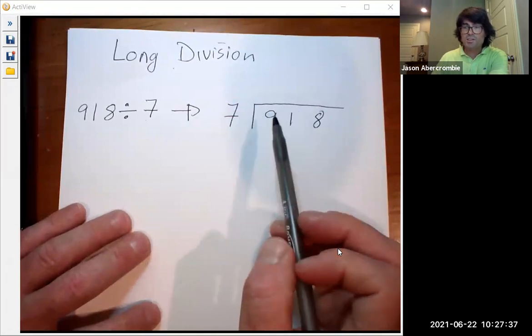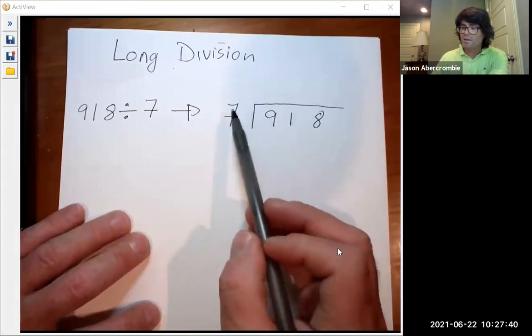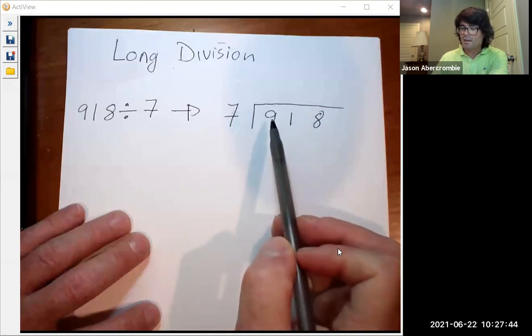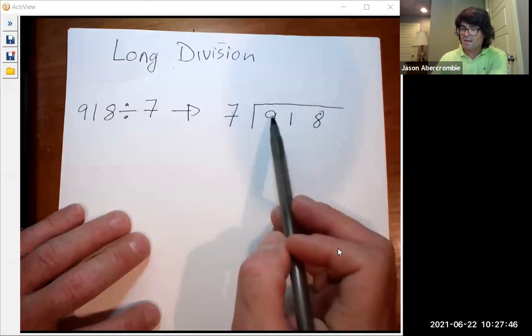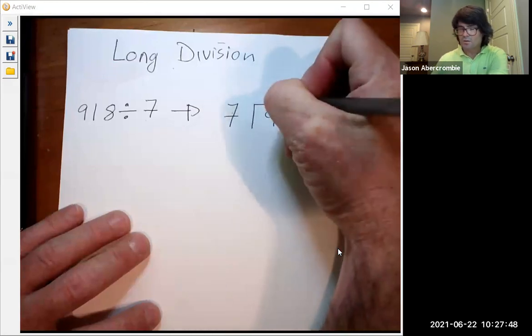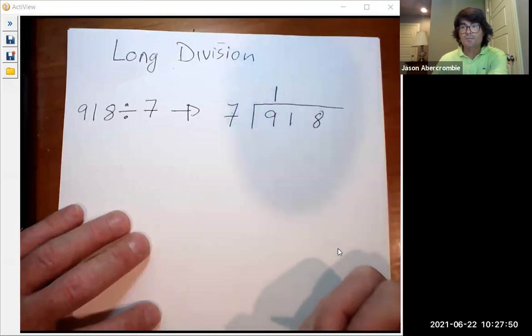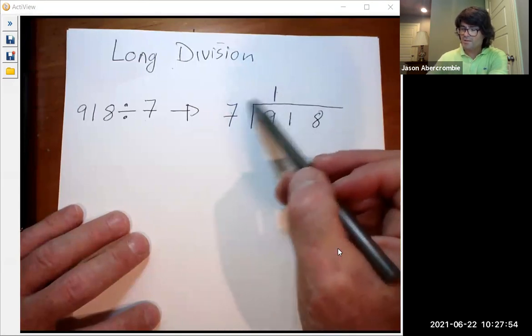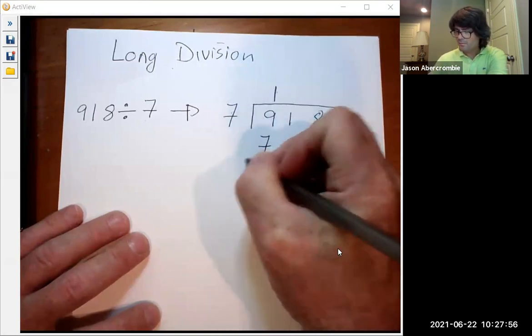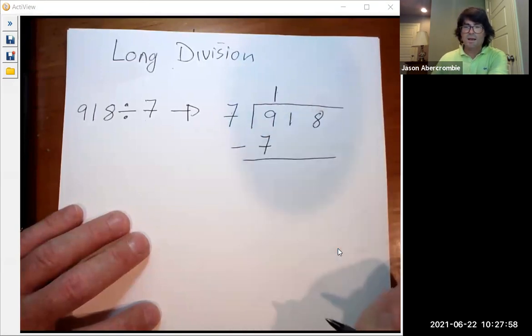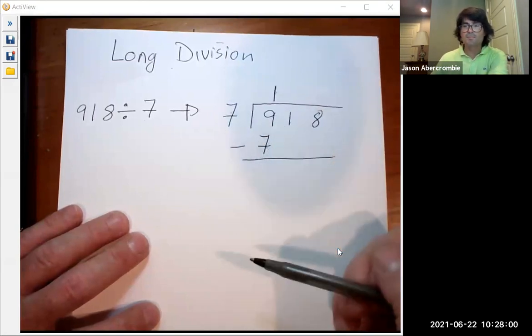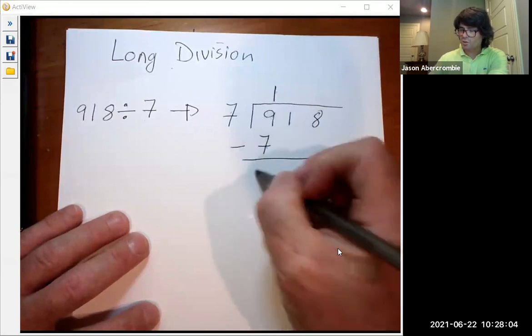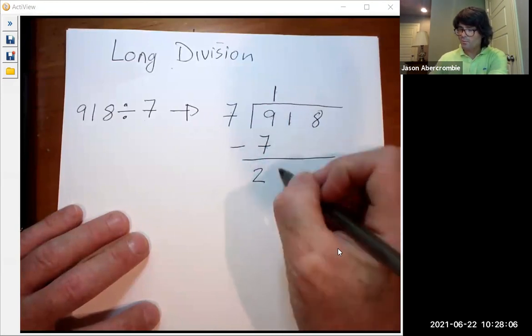The way you start is you ask a question. This goes into that how many times, and it looks to me like seven goes into nine one time. We're going to write a one up top and once you have that, one times seven makes seven and you're going to subtract that seven from that nine. Nine minus seven is two, and then bring down the one and the eight.